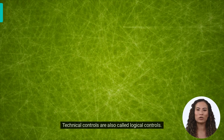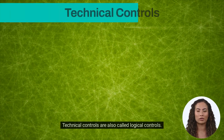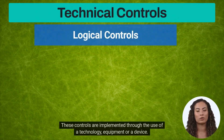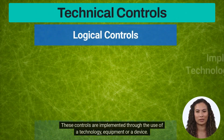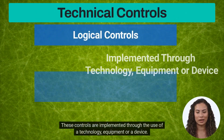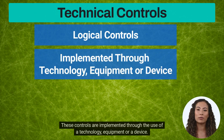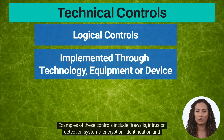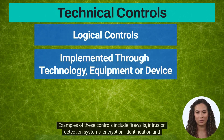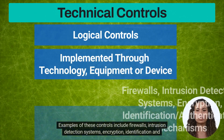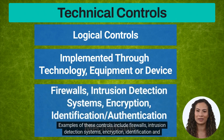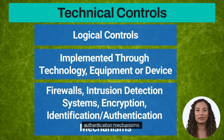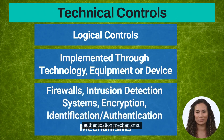Technical controls are also called logical controls. These controls are implemented through the use of technology, equipment, or a device. Examples of these controls include firewalls, intrusion detection systems, encryption, identification, and authentication mechanisms.